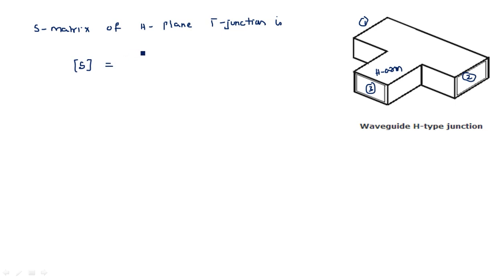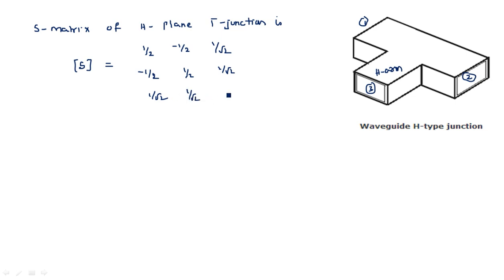The scattering matrix of the H-plane T-junction is: S = (1/2, -1/2, 1/√2; -1/2, 1/2, 1/√2; 1/√2, 1/√2, 0). This is the scattering matrix we calculated in the previous video.